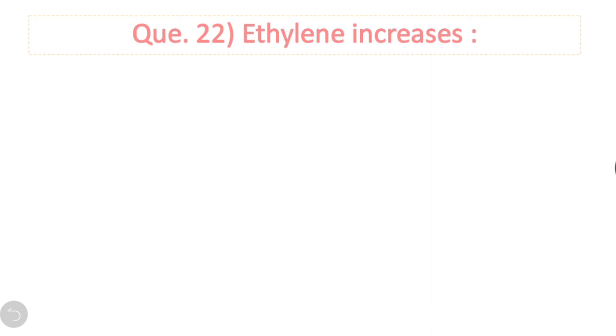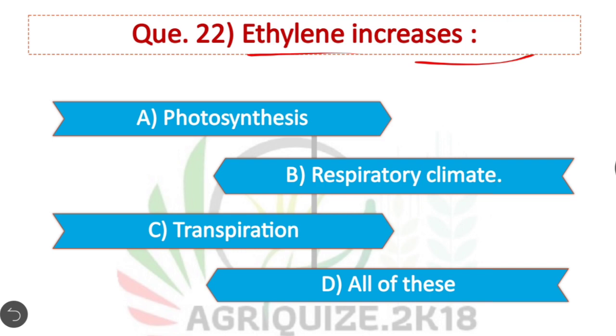Question 22: Ethylene increases — Option B is correct. Ethylene increases the respiratory climacteric.